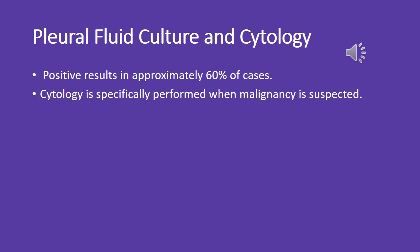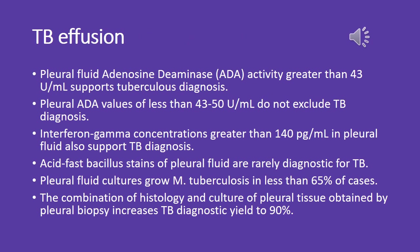For TB effusion: pleural fluid adenosine deaminase (ADA) activity greater than 43 units/mL supports a tuberculous diagnosis. Pleural ADA values less than 43.50 units/mL do not exclude TB. Interferon-gamma concentrations greater than 140 picograms/mL in pleural fluid also support TB diagnosis. Acid-fast bacillus stains of pleural fluid are rarely diagnostic for TB. Pleural fluid cultures grow M. tuberculosis in less than 65% of cases. The combination of histology and culture of pleural tissue obtained by pleural biopsy increases TB diagnostic yield to 90%.